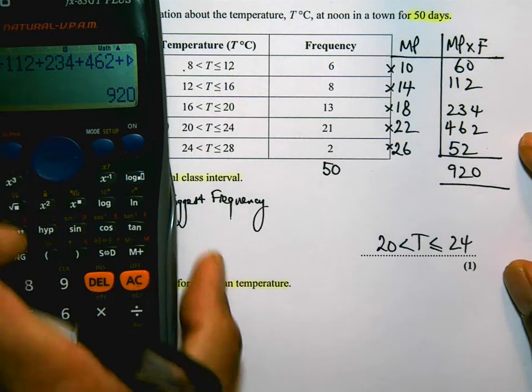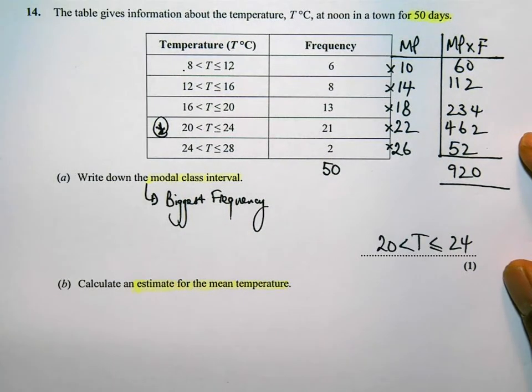Now, 920 is what they all add up to. And at this stage, I would, if I was in an exam, go through all the calculations, the timesing and the adding up that I've done so far.